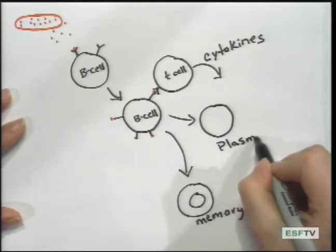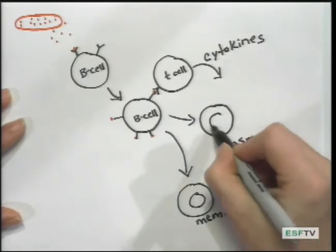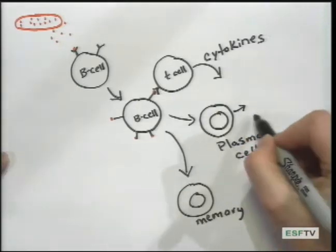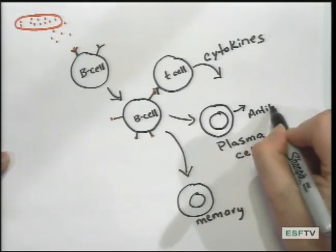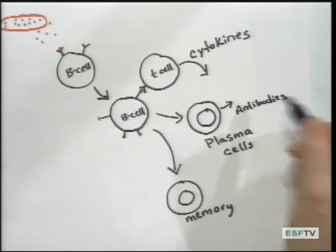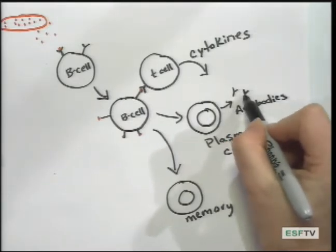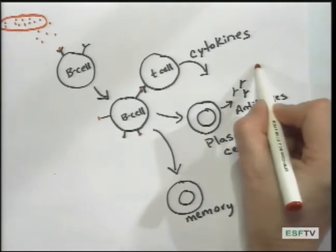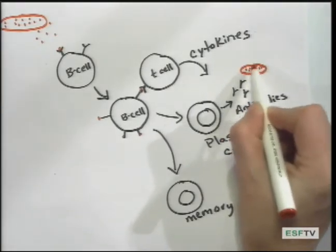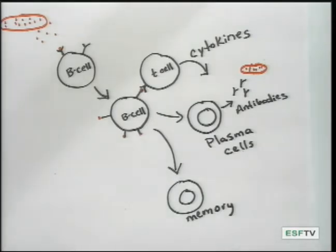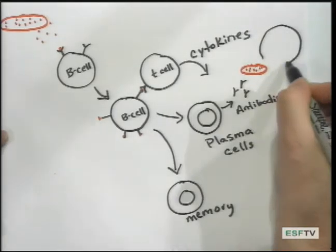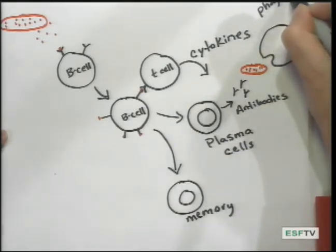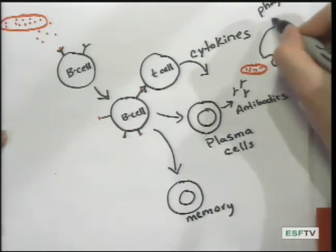Okay? And again, this is a mechanism. And these plasma cells produce the antibodies that can tag any invaders and basically mark them for phagocytosis by macrophages.